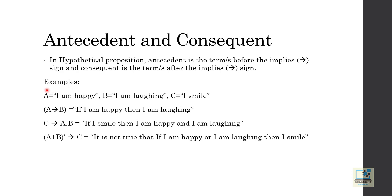So I have an example: A equals 'I am happy', B equals 'I am laughing', and C equals 'I smile'. Here A, B, and C are the propositional variables, and 'I am happy', 'I am laughing', and 'I smile' are the propositional constants. So A implies B can be converted into: if I am happy, then I am laughing.